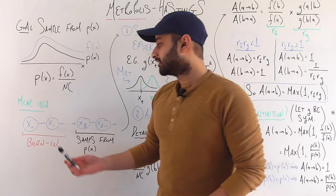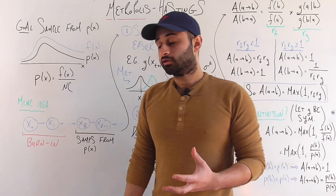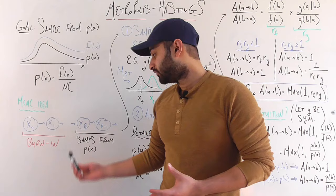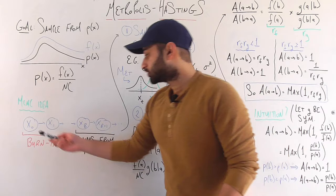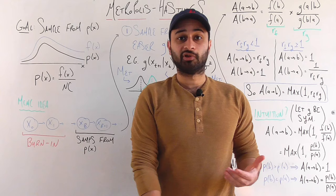The way MCMC tackles this problem is to design a very special type of Markov chain such that the initial samples — called the burn-in period — may not exactly follow the target distribution p of x. But eventually we get to some state x_b such that everything from there on is treated as a sample from p of x. This initial part is called the burn-in; we typically throw those samples away because they are not following the distribution, but they are necessary to reach the point where we are sampling from the distribution.